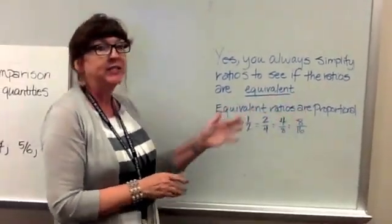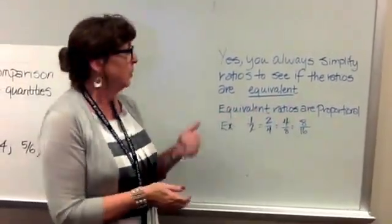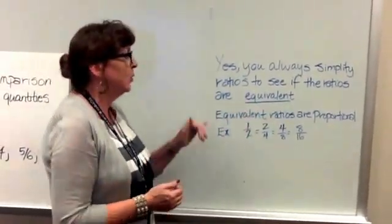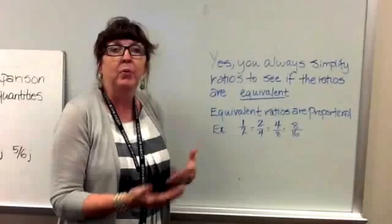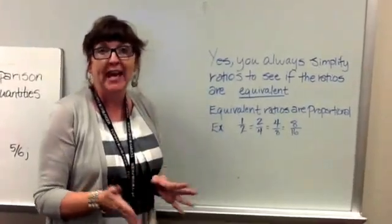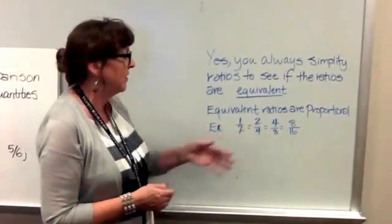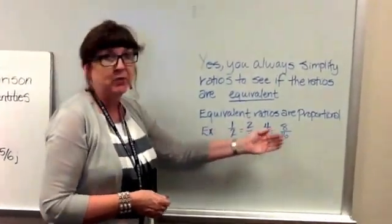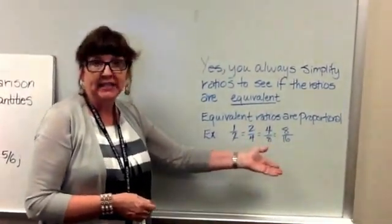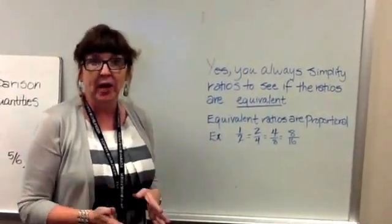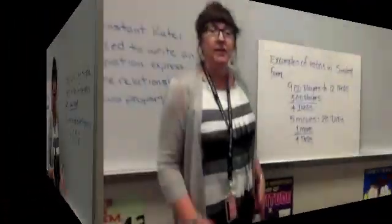When you simplify ratios, you can see whether or not they're equivalent. So we're looking for ratios that are equivalent, because that leads us into equivalent ratios are proportional, and you'll learn about more of that in the future. So for example, one-half is equivalent to two-fourths, which is equivalent to four-eighths, which is equivalent to eight-sixteenths. And you'll see more of that as we get into making tables and graphs and showing our proportional parts of graphs.